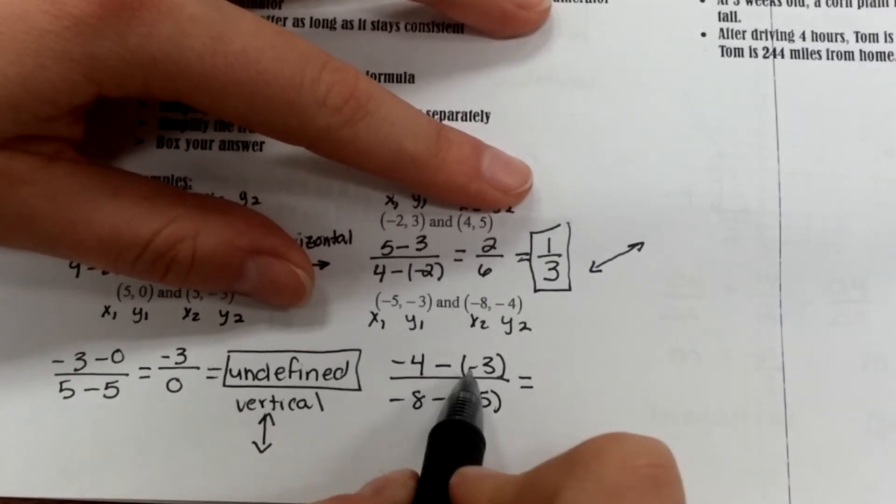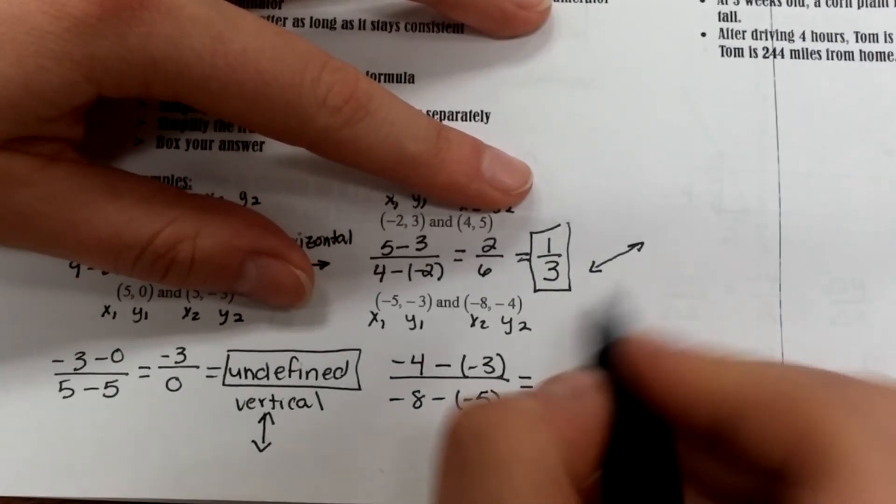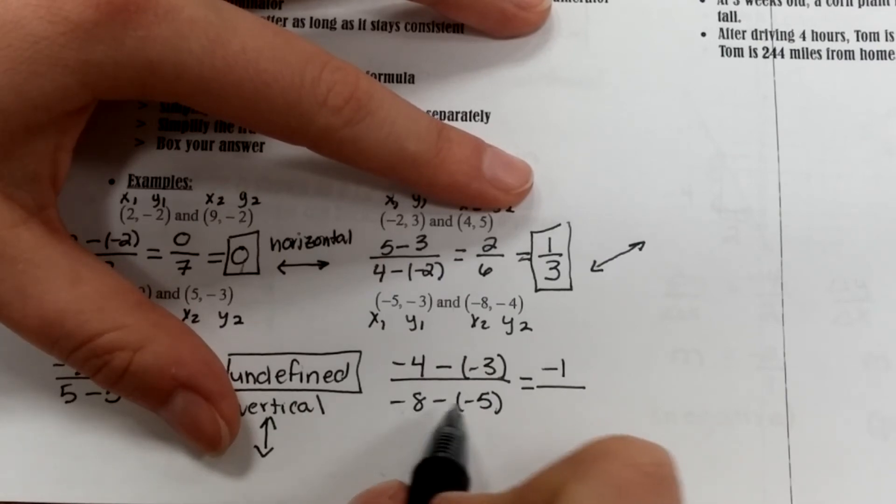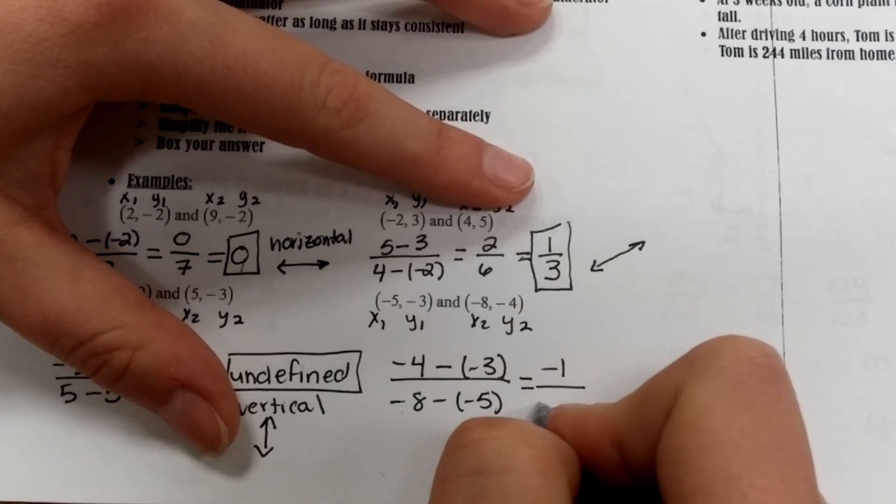So negative 4 minus negative 3 is negative 4 plus 3, which is negative 1, over negative 8 minus a negative 5 is negative 8 plus 5, which is negative 3.